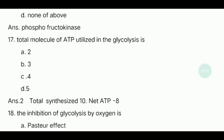Seventeenth question: What is the total number of ATP molecules utilized in glycolysis? The answer is 2 ATP are consumed. The total ATP produced is 10, giving a net gain of 8 ATP molecules.